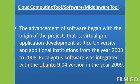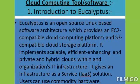Eucalyptus is an open source Linux-based software architecture which provides an EC2-compatible cloud computing platform and an S3-compatible cloud storage platform. It implements scalable, efficient, and private and hybrid cloud within an organization's IT infrastructure. Eucalyptus was developed to support high performance computing power and can be deployed without modification on all major Linux OS distributions including Ubuntu, RHEL, CentOS, OpenSUSE, and Debian.